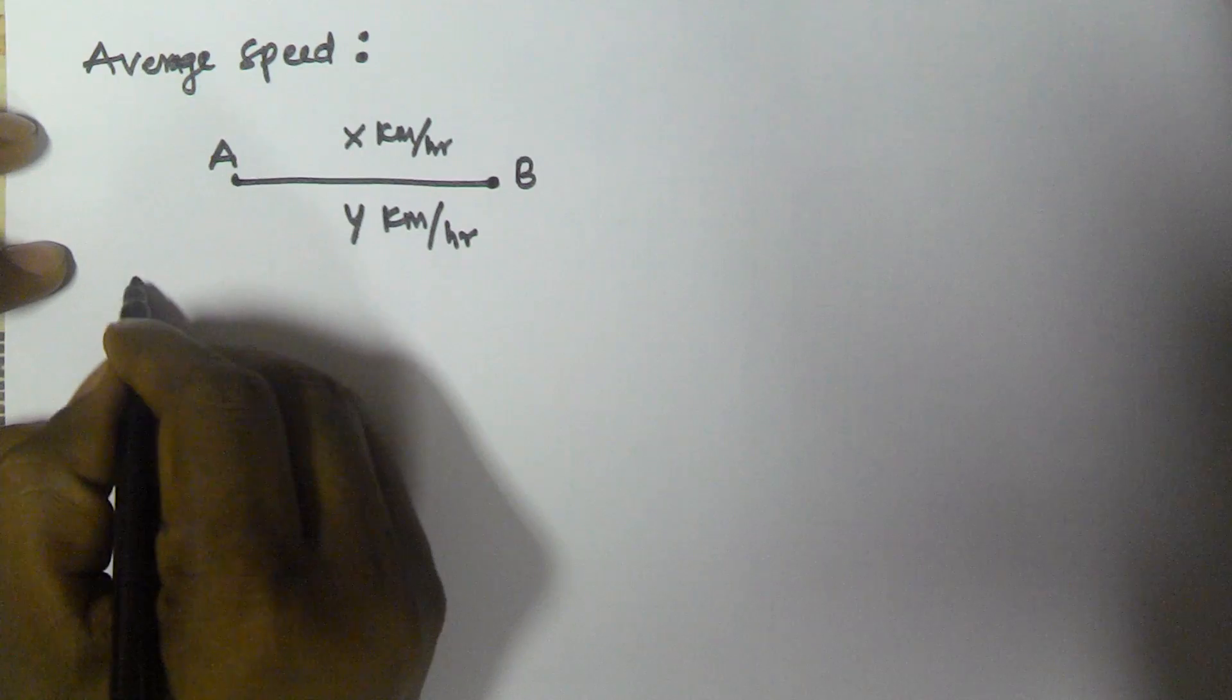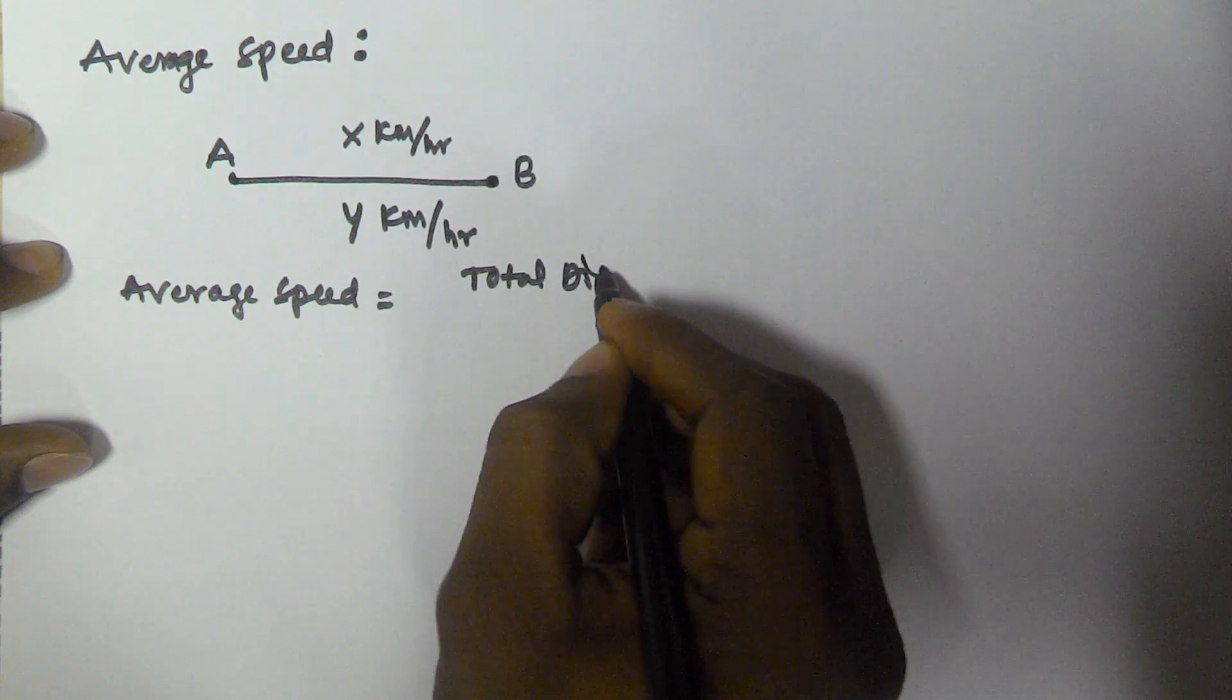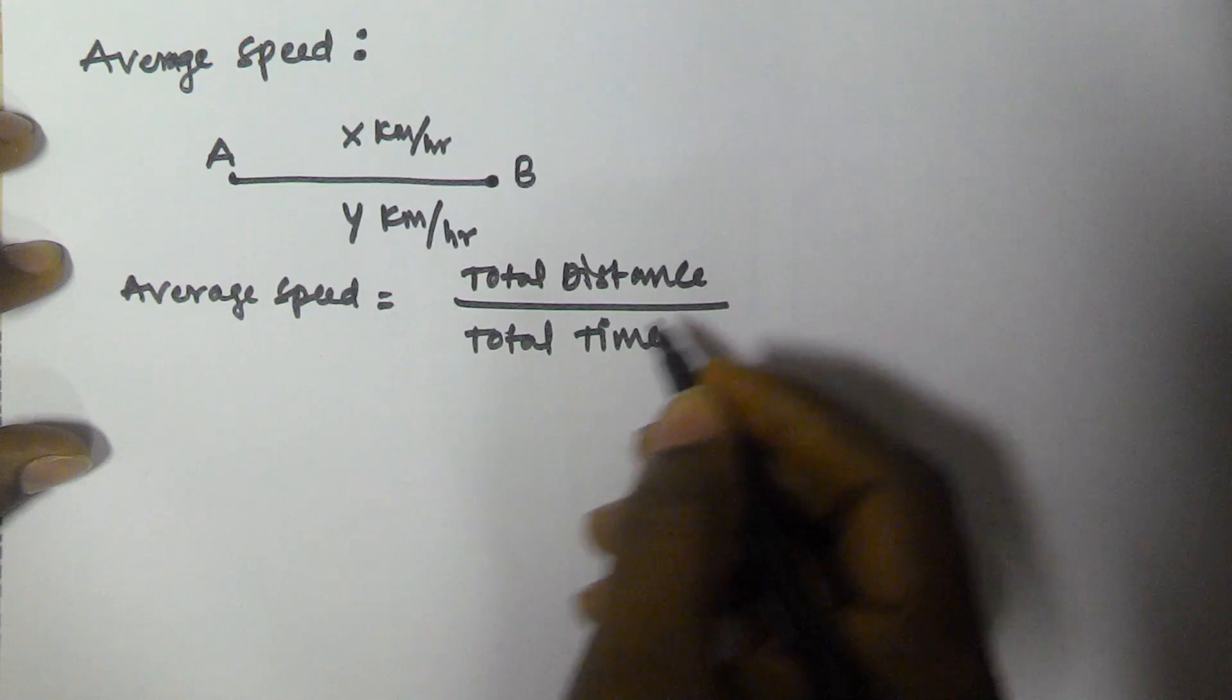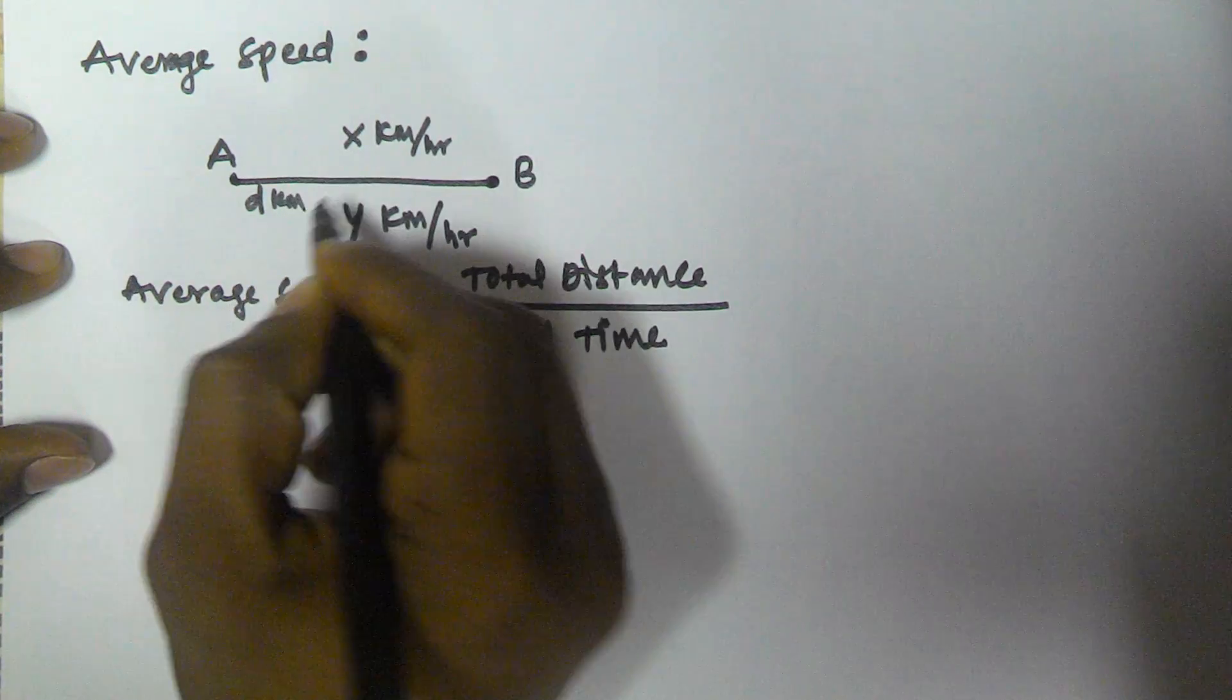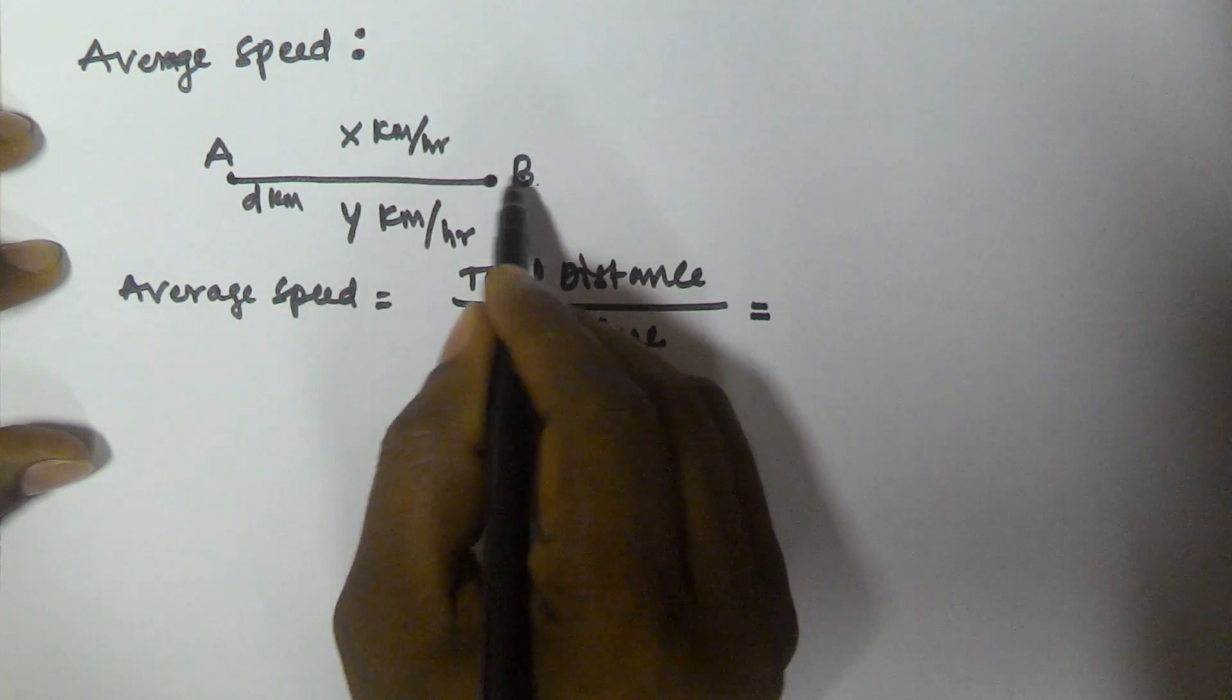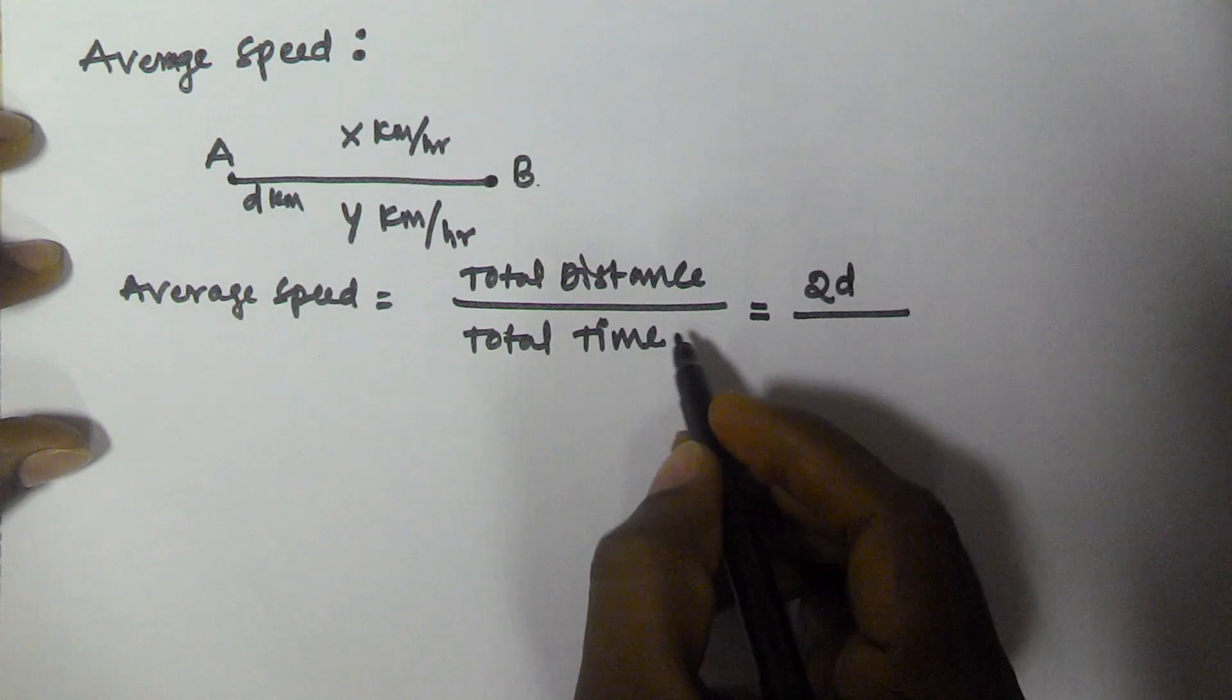Then average speed is equal to total distance by total time taken. Let us assume from A to B he travelled d km. So now the total distance is he travelled from A to B and again B to A. That means the total distance he travelled is 2d by total time.